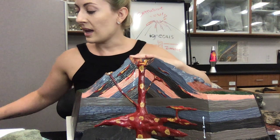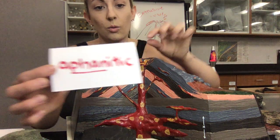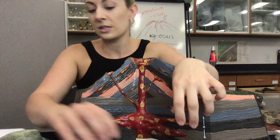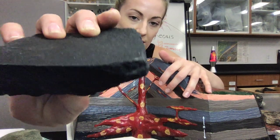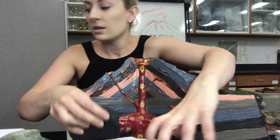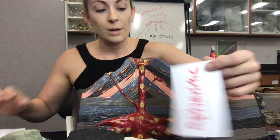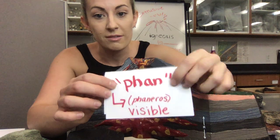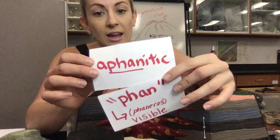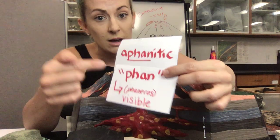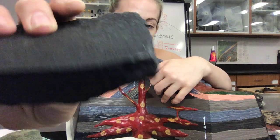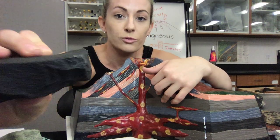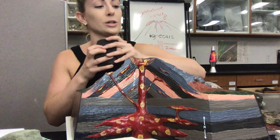Our other word is aphanitic, meaning without visible crystals. We have a specimen here — basalt — where you cannot see the individual crystals. When referring to aphanitic, remember that 'phan' means visible and 'a' means without, so it means without visible, aka invisible. Not non-existent — you just can't see them. There are crystals here; however, they formed so quickly that the crystals didn't have time to grow.